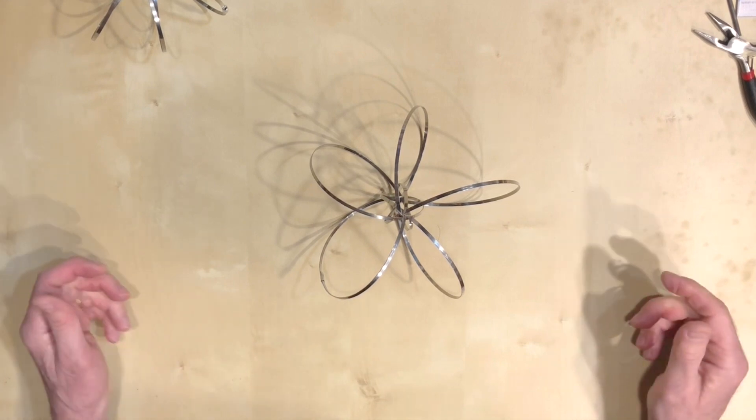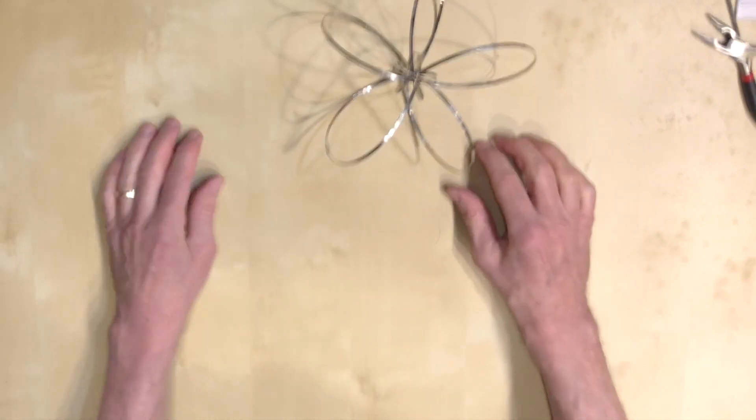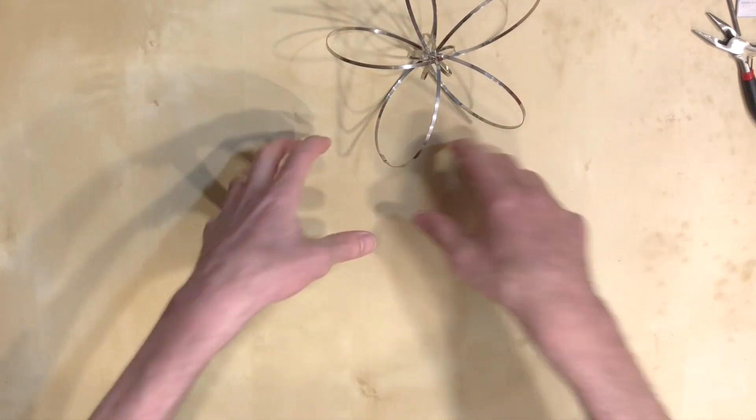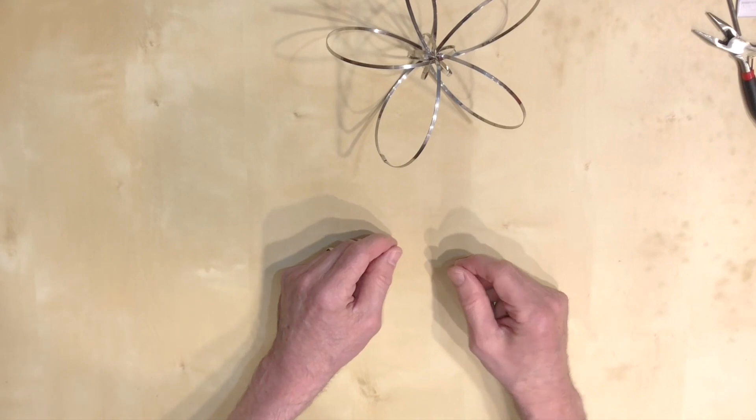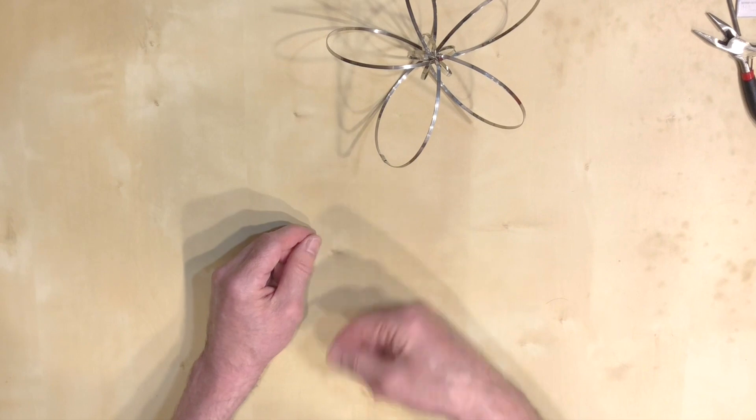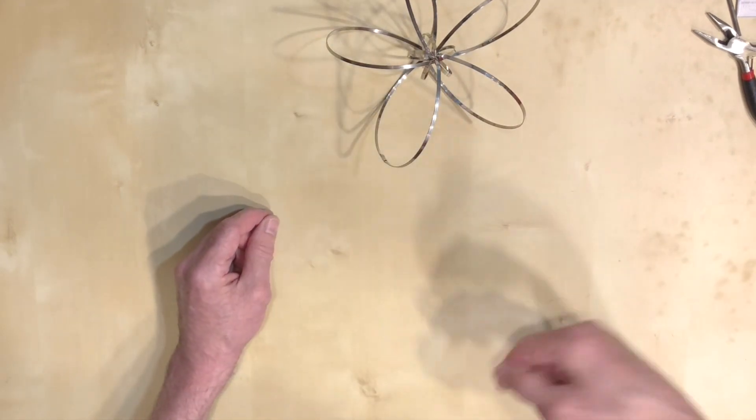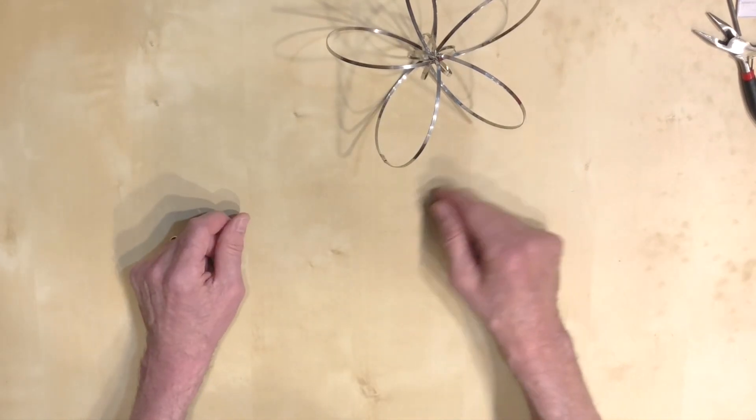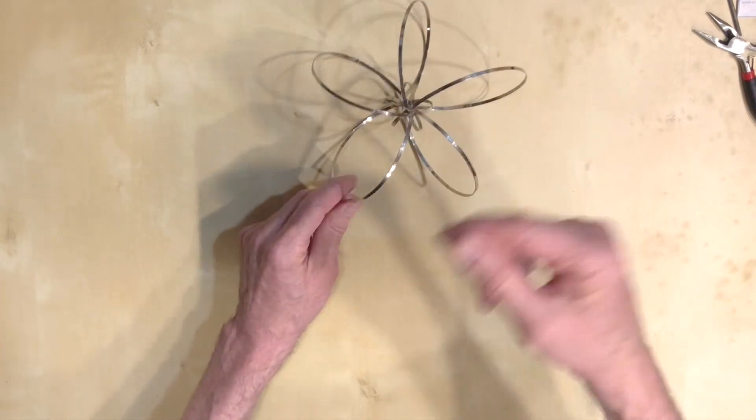If you imagine a big torus lying flat on the table, a big doughnut, and imagine yourself wrapping a string or wire around the torus, and as you wrap it around the torus you also go around the torus this way. So after doing this a number of times you join the two ends and you will get the torus knot.